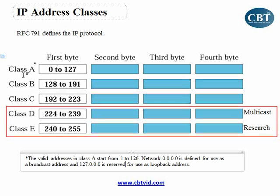That's pretty easy. If the first octet of the IP address is between 0 and 127, that is a Class A address. If the first octet is between 128 and 191, it is Class B. If it's between 192 and 223, it is Class C. 224 to 239 is Class D, and 240 to 255 is Class E.